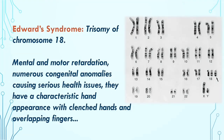Edward syndrome is another kind of trisomy, where the trisomy occurs in chromosome number 18 — an extra chromosome is present in the 18th karyotype. In this case, the individual has mental and motor retardation, numerous congenital anomalies causing serious health issues, and a characteristic hand appearance with clenched hands and overlapping fingers.